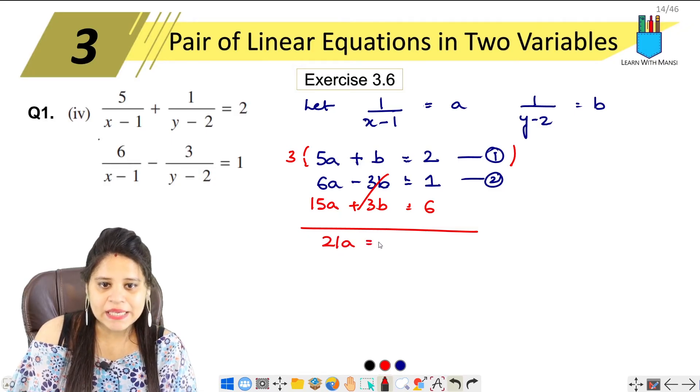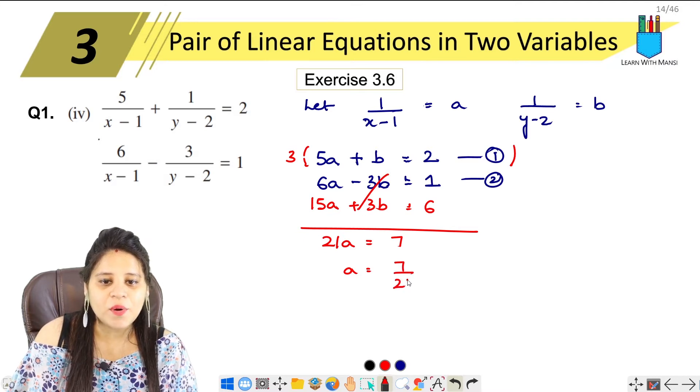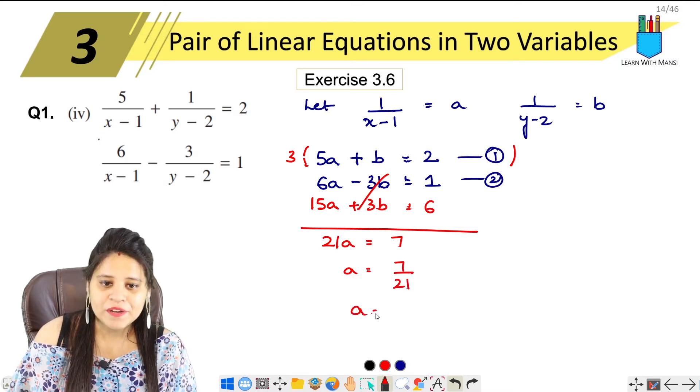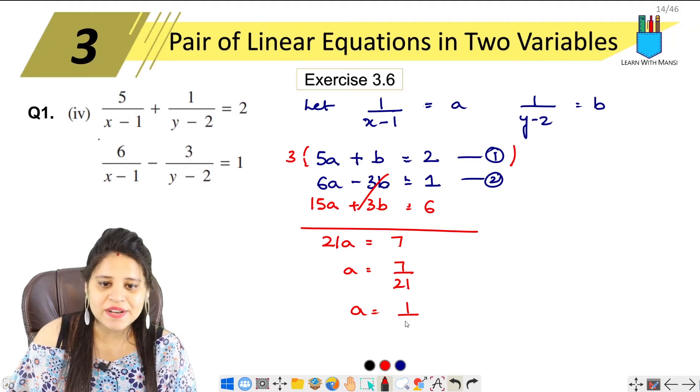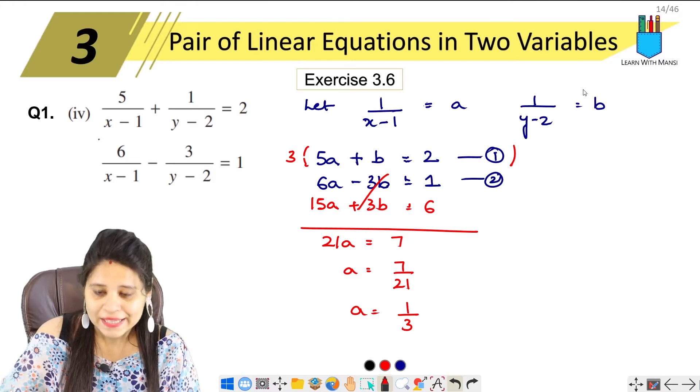So 21a equals to 7. So a equals to 7 upon 21. So a equals to 1 upon 3.